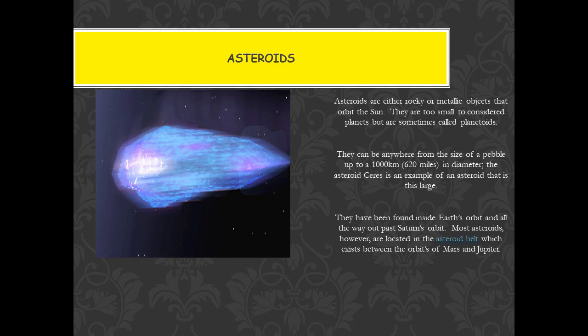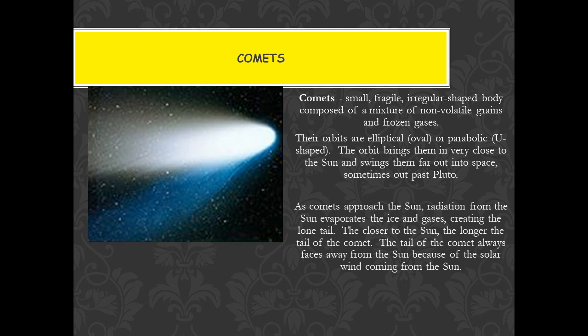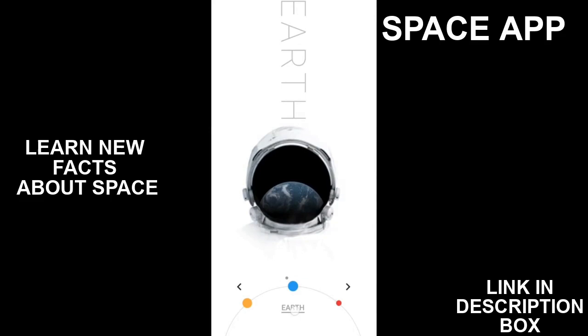These are asteroids. Asteroids are either rocky or metallic objects that orbit the sun. The asteroid belt is found between Mars and Jupiter. There are other heavenly bodies like comets, which you will read about in your higher classes.